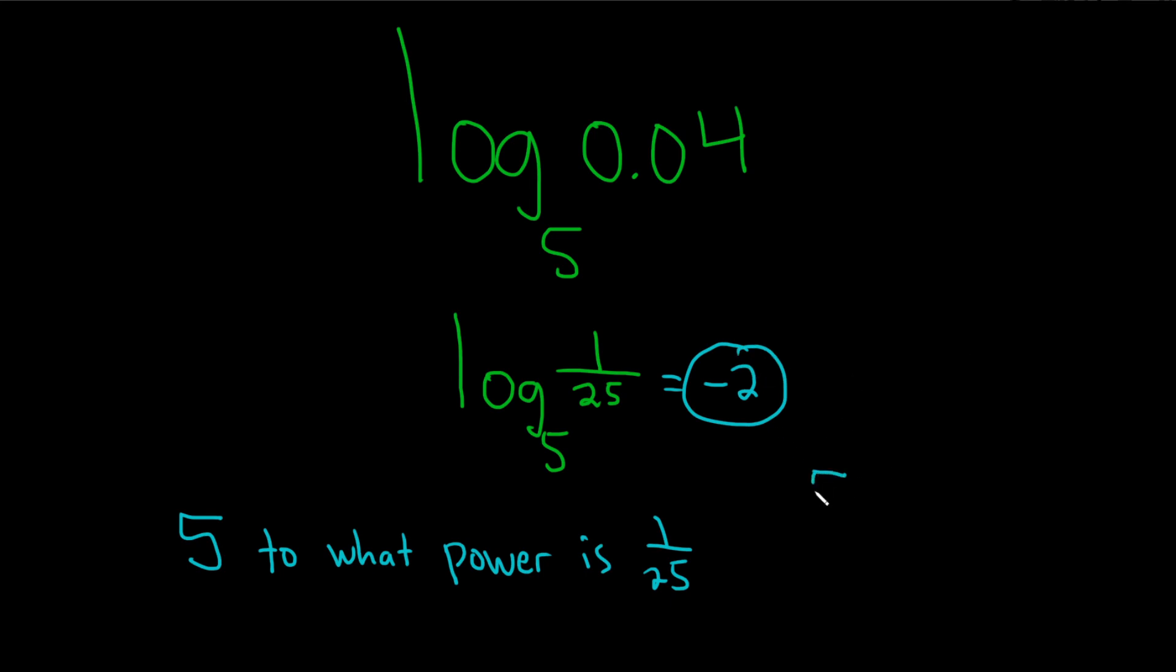We can check it: 5 to the negative 2 is equal to 1 over 5 squared, which is 1 over 25. So it certainly checks.